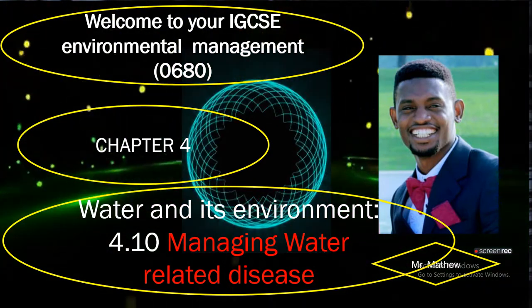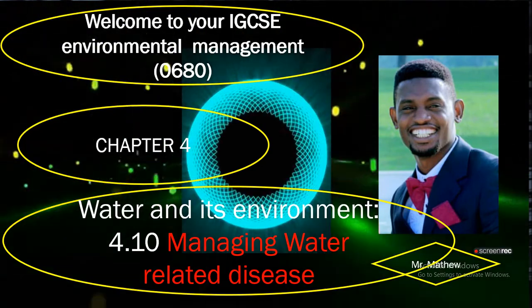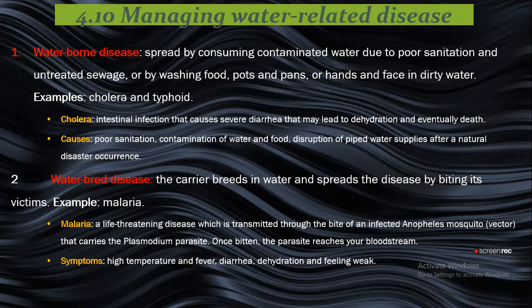Still on water and its environment, in this aspect we're going to be looking at how to manage water-related diseases. The first aspect we'll be looking at is waterborne diseases and what they are. Waterborne diseases are spread by consuming contaminated water, which is majorly due to poor sanitation and untreated sewage.